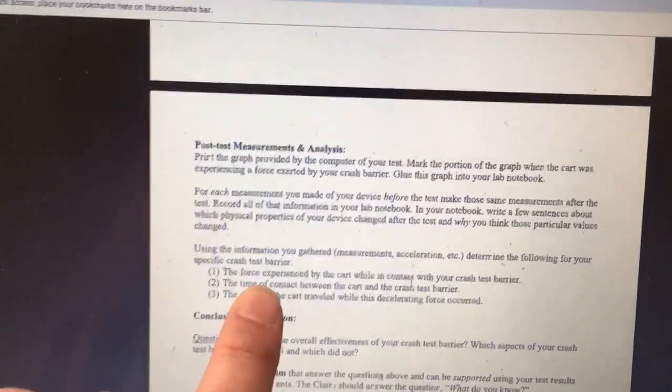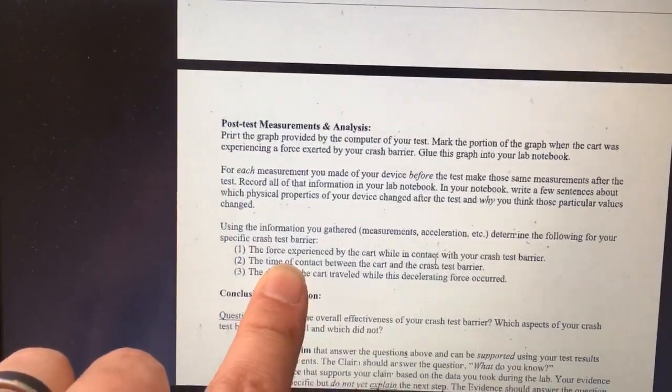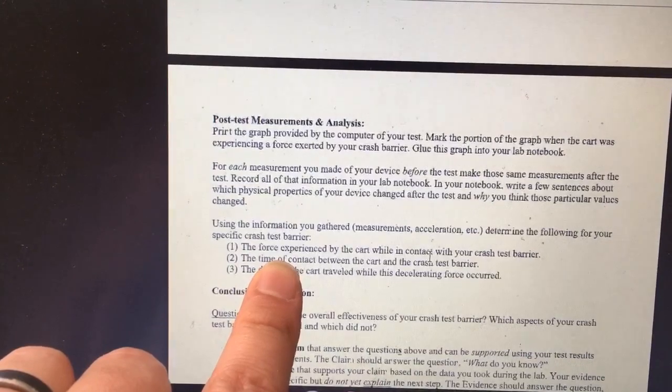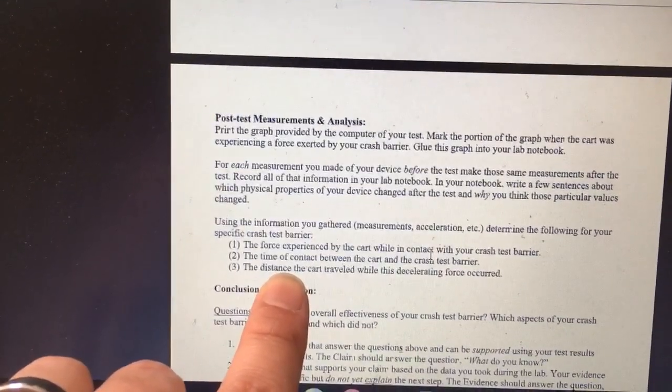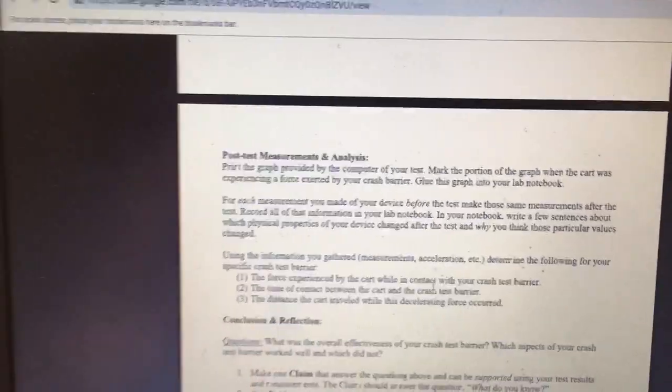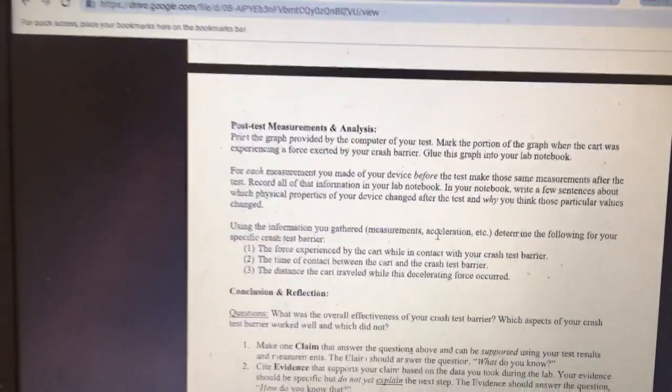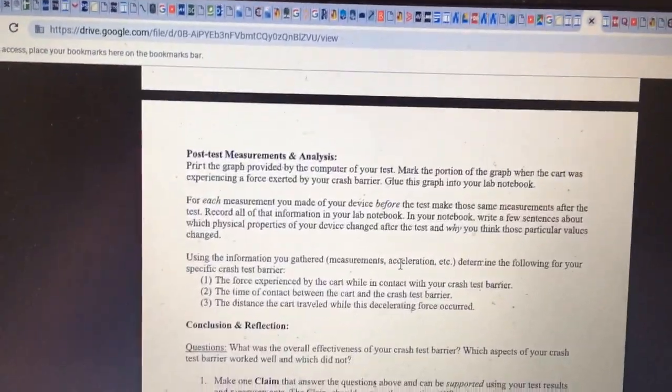And you can use either your video or you can use the data table to get the time of the collision. And then the distance, and then the distance you can get from your video, the rulers in your video, so you can get that distance from there. So these are all things you need to put in your post-test measurements and analysis. Basically, your measurements is your data. So this is your data section.